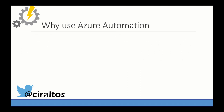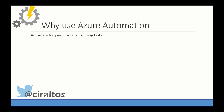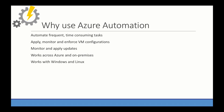So why use Azure Automation? Well, you'd use it for the same reason you'd use any automation product. It allows you to automate frequent, time-consuming tasks, apply, monitor, and enforce configurations with Azure DSC, and monitor and apply updates. All this functionality works across Azure as well as on-premises with a hybrid worker, and it works with Windows and Linux.